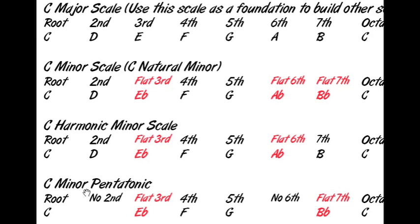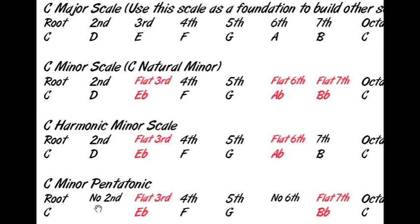Another scale we're going to be working with is the C minor pentatonic scale. See how I have blank spaces here — you have no second and you have no sixth. You're actually omitting those notes, and that's where pentatonic — that five-note scale — gets its name from, because you have one, two, three, four, five notes in that scale, not counting the octave. So this one, you flat your third, you have an E flat in there, and you flat your seventh, and you also omit your second of the scale and the sixth. That gives you a nice minor pentatonic scale.